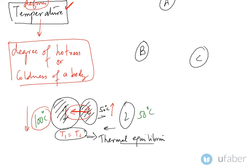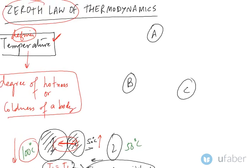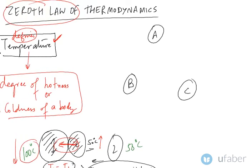Now with the help of thermal equilibrium, let us try and define the Zeroth Law of Thermodynamics. Here I have body A, body B, and body C. Let me say that body A and body B are in thermal equilibrium, that is the temperature of body A is equal to temperature of body B. And now separately...